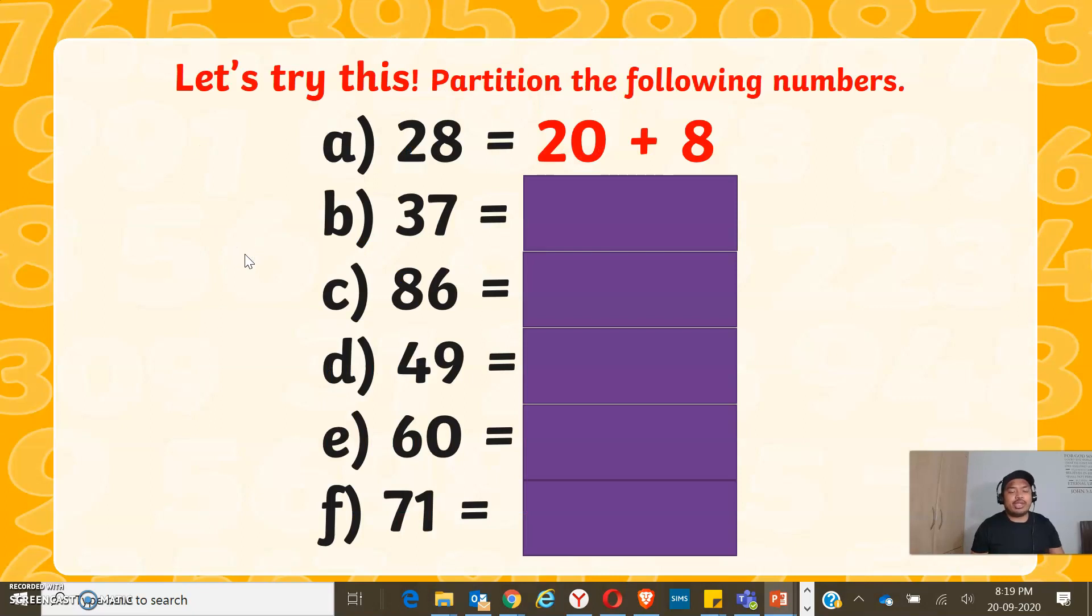Now for your activity, let's try these. Partition the following numbers by doing the same as letter A. 28 is equal to 20 plus 8. Pause the video and write your answers.